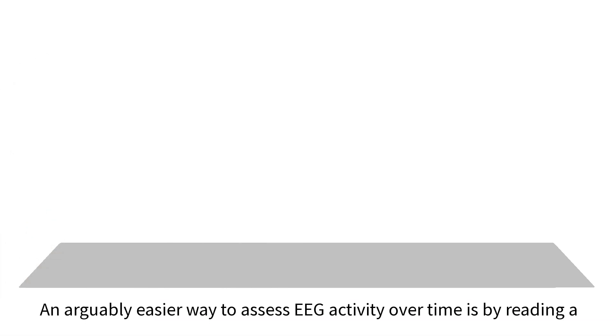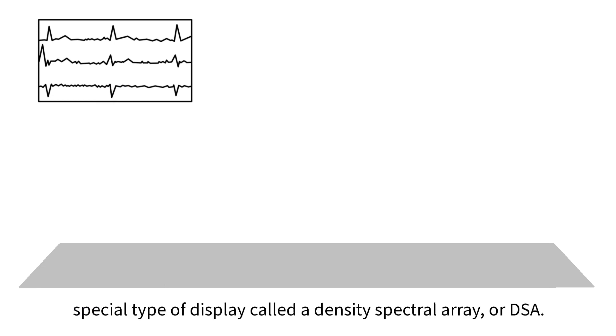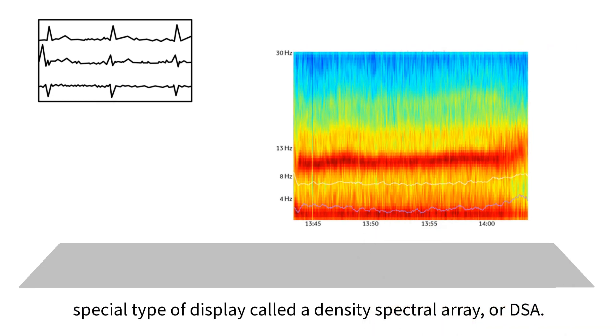An arguably easier way to assess EEG activity over time is by reading a special type of display called a density spectral array, or DSA.